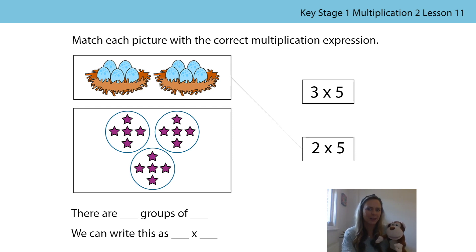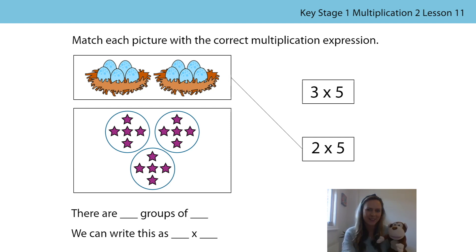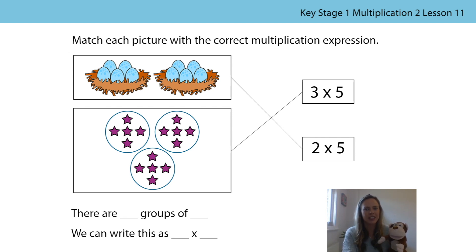Let's have a look at the next picture. This time the groups have been circled. We've got three groups. How many stars are there in each group? Bongo says there are five stars in each group — well done Bongo. So there are three groups of five. There's one five, two fives, three fives. We can write that as three times five. The three represents the number of groups and the five represents the number of stars in each group.